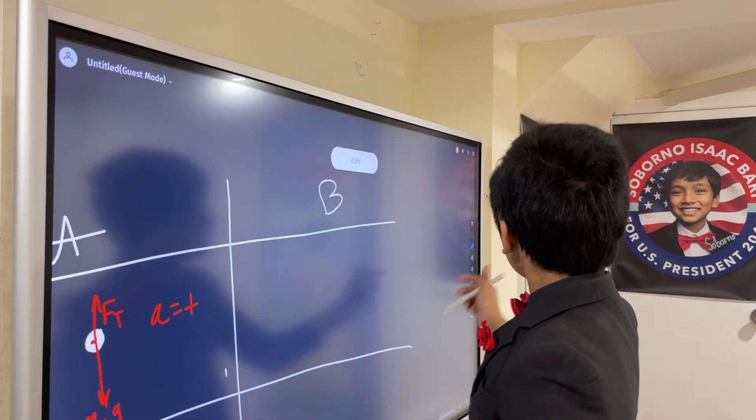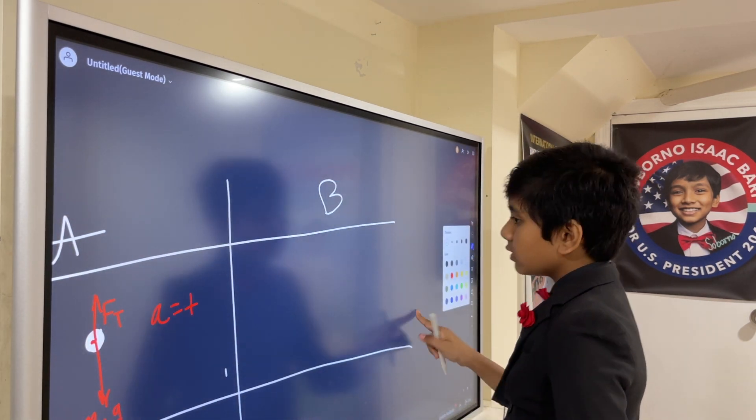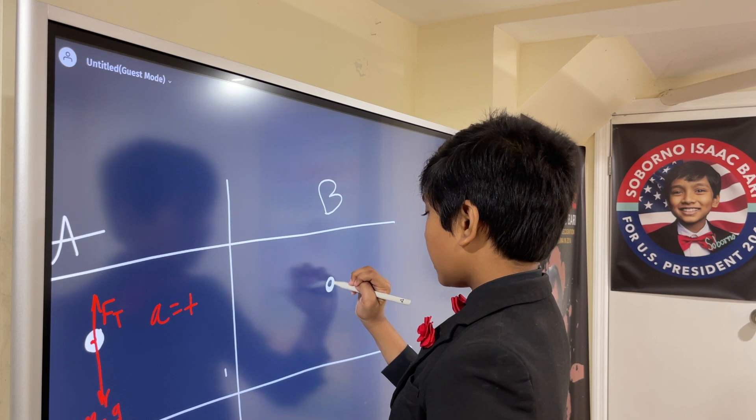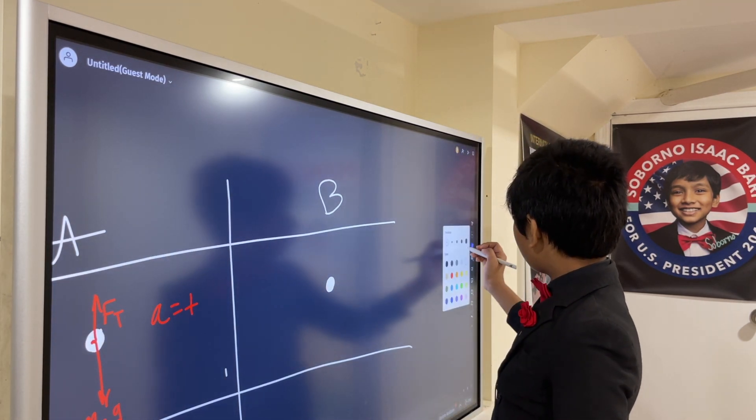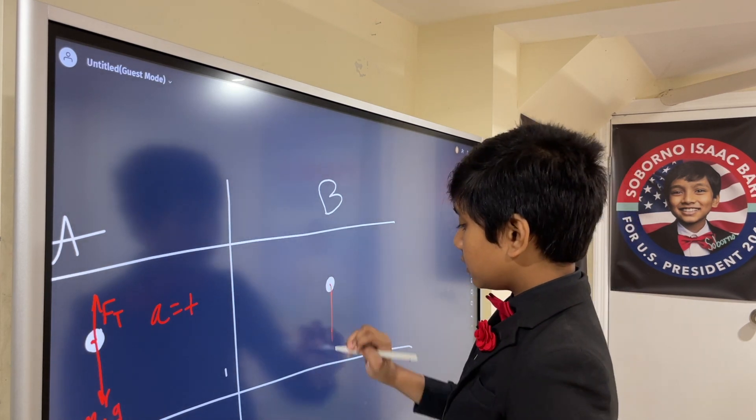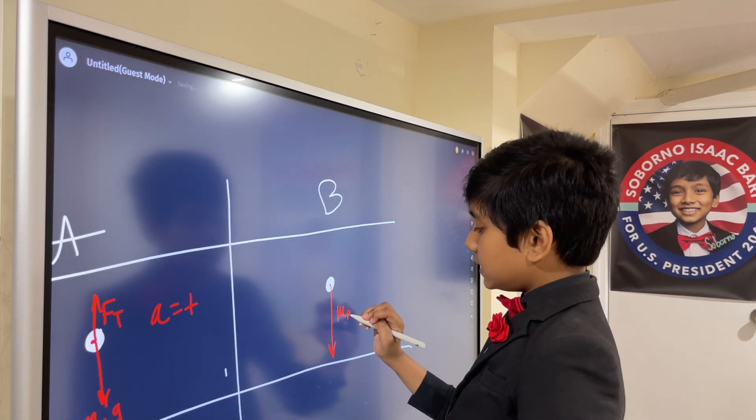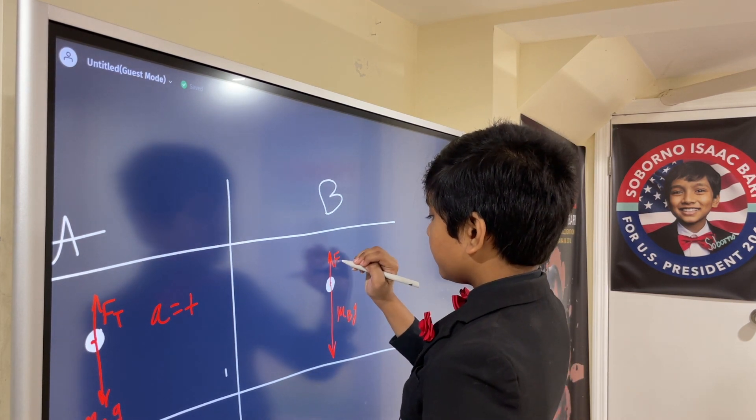Meanwhile, for B, let me switch back to white. We have B right over here, and we're going to draw the lines, which are going to be the same. This is MBG, and this is FT.